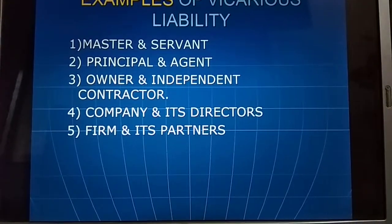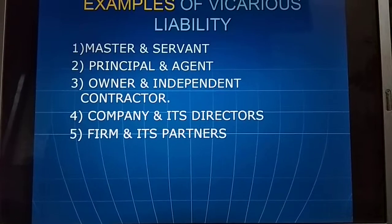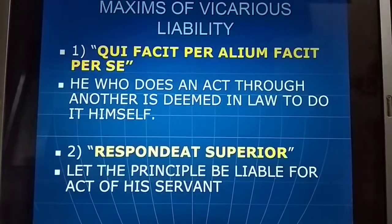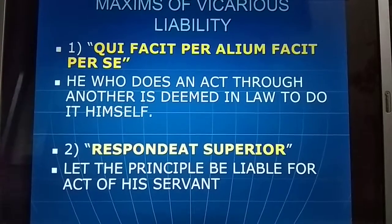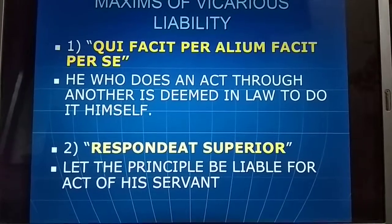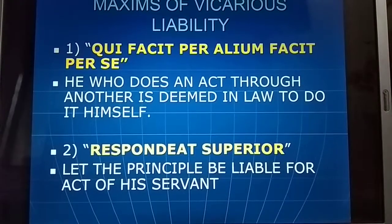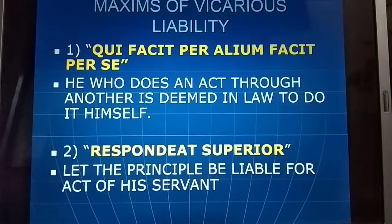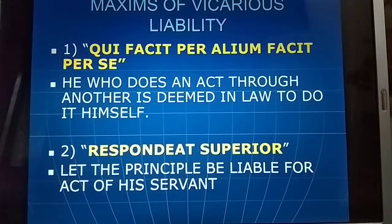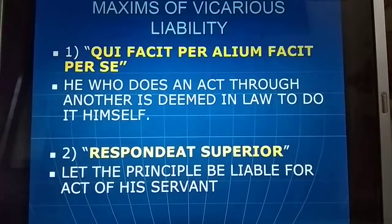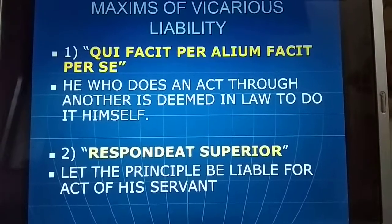Further examples include a company and its directors, and a firm and its partners. The maxims of vicarious liability are: 'Qui facit per alium facit per se' — he who does an act through another is deemed in law to do it himself — and 'Respondeat superior' — let the principal be liable for the acts of a servant. These two maxims should be quoted when writing about vicarious liability.